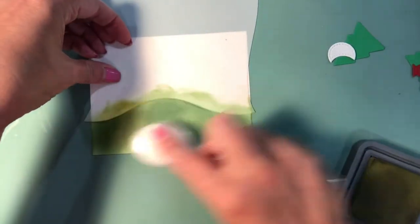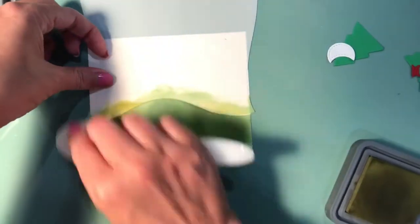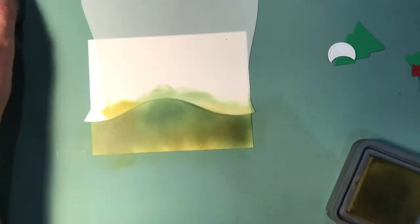I go back in with the Forest Moss and I just keep putting the frame back over just to make sure that there's no white spots when I put the card together. I just want to make sure everything is colored in and it's going to look okay.